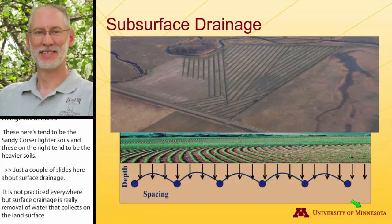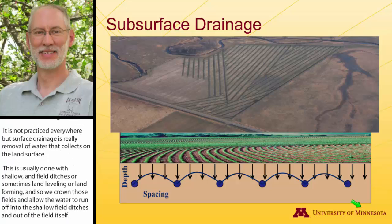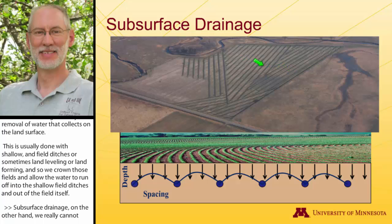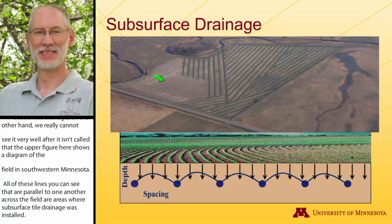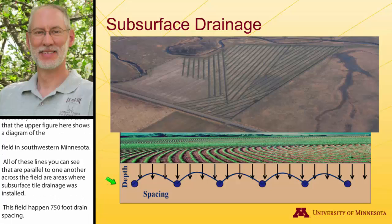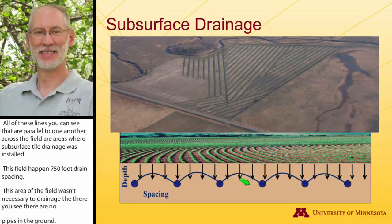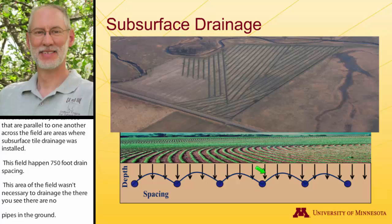Subsurface drainage, on the other hand, we really can't see very well after it's installed, but the upper figure here shows a diagram of a field in southwestern Minnesota. All of the parallel lines you can see across the field are areas where subsurface tile drainage was installed. This field has a 50-foot drain spacing. In this area of the field it was not necessary to drain, so the farmer chose not to drain it — there are no pipes in the ground. The diagram shows the underground pipes spaced apart, with gravitational water draining to those sites to improve field condition.